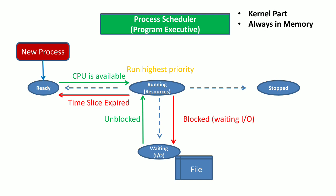A process scheduler has two queues: the ready queue and the waiting queue of processes, to decide which process has to run on the CPU. The process scheduler then selects the process with the highest priority to run on the CPU.